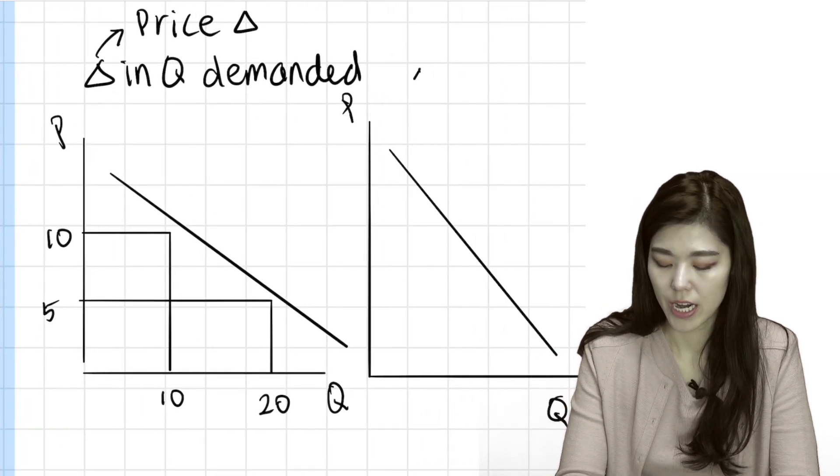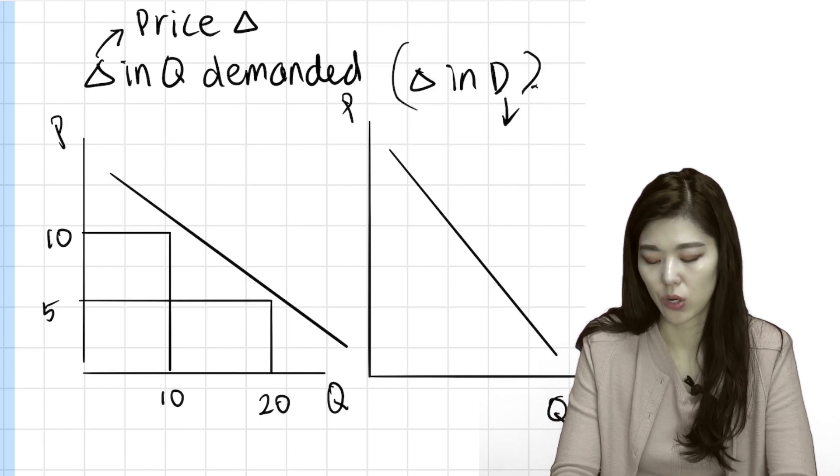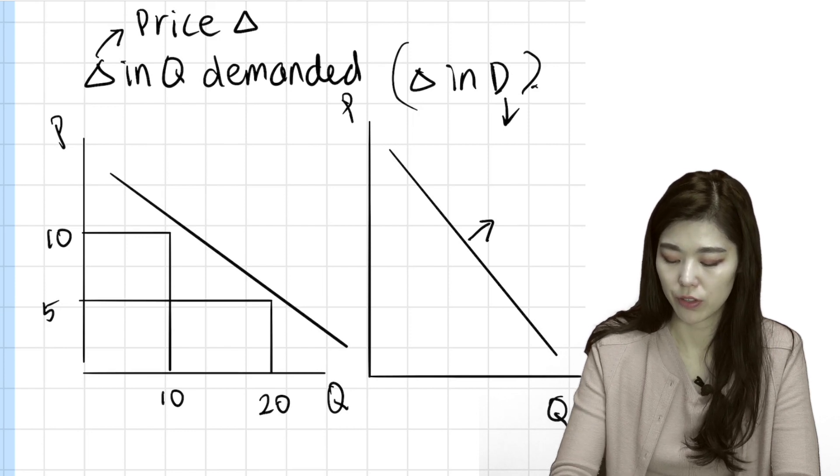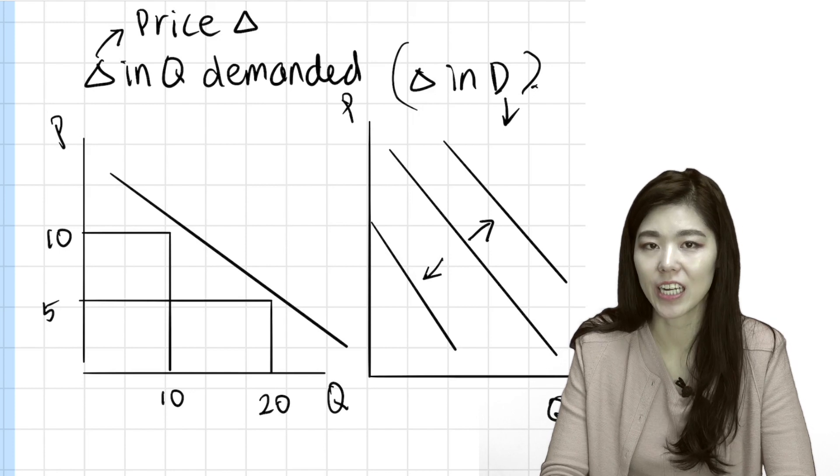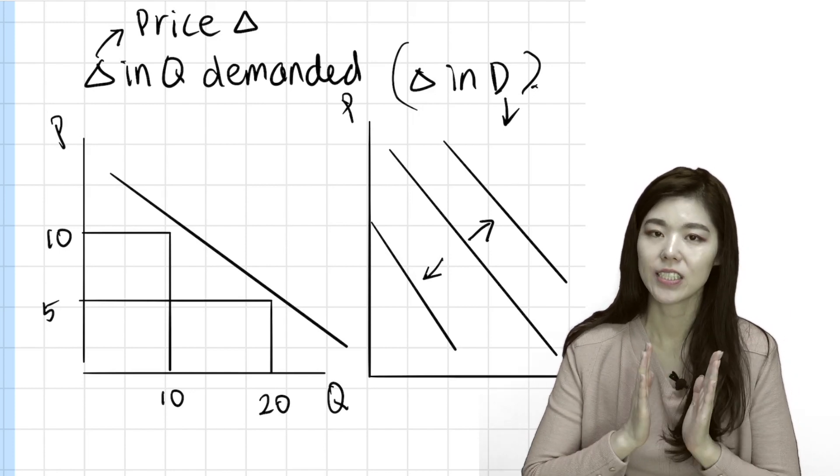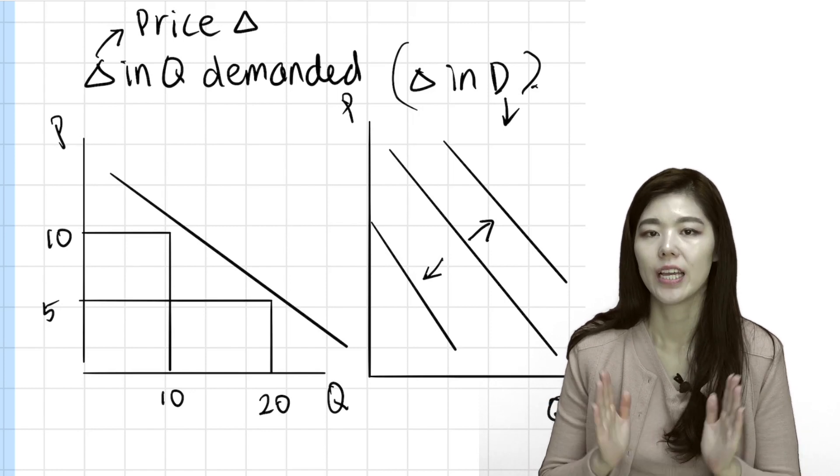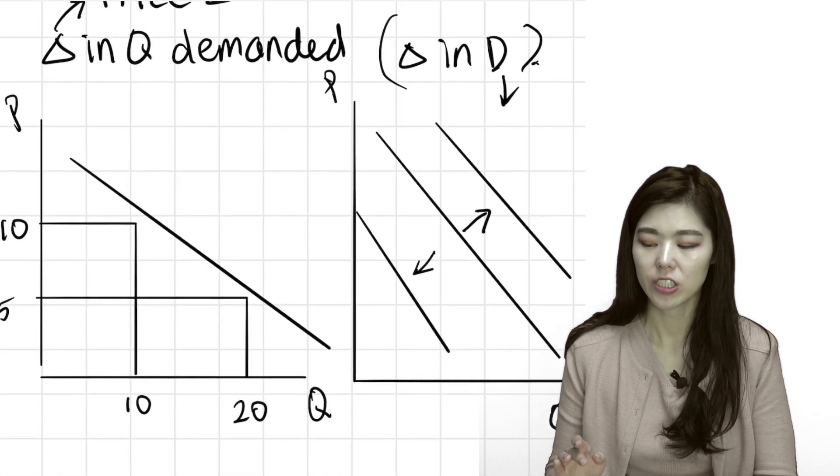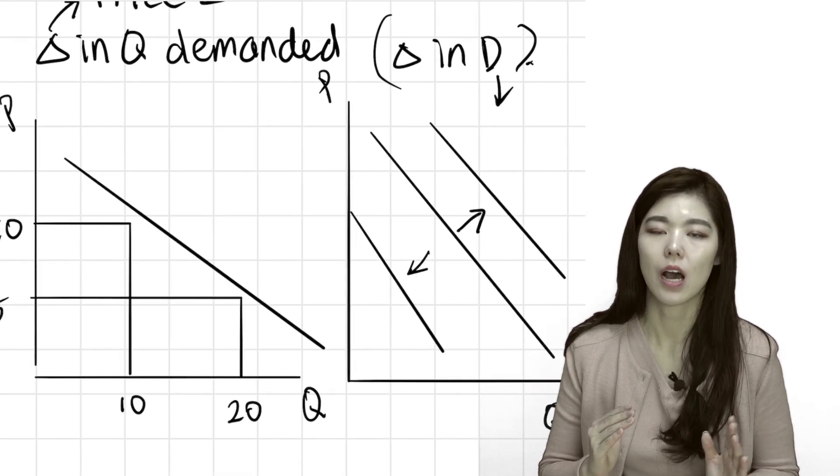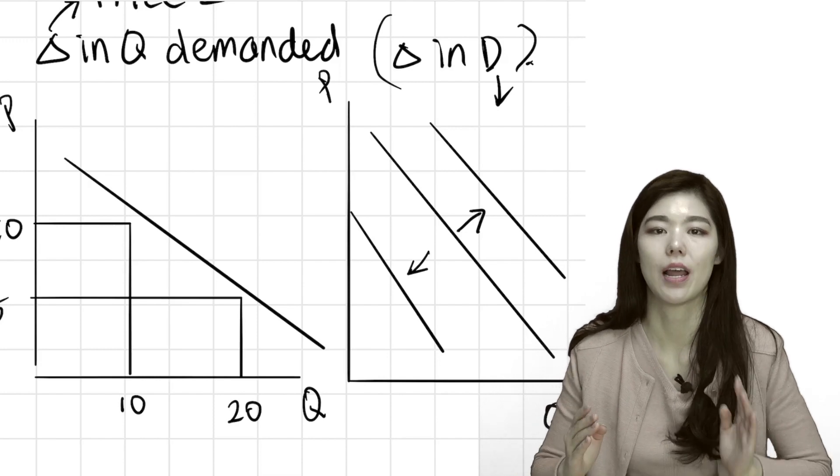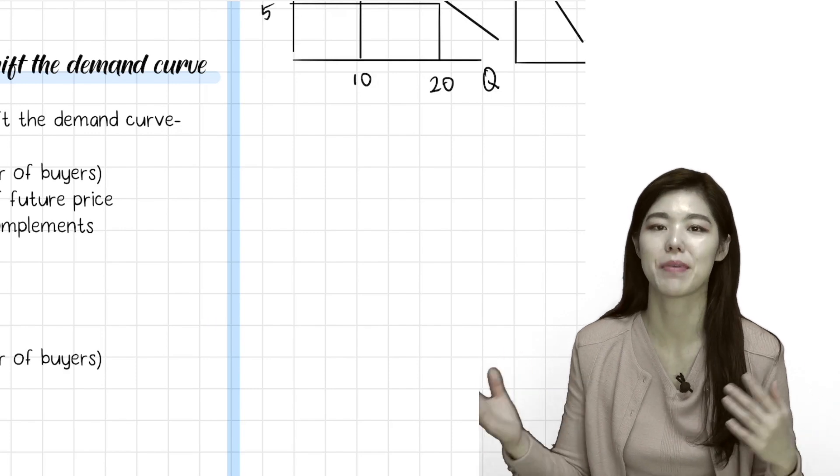Change in demand means a shift in demand. So either your demand will shift to the right or your demand will shift to the left. That's a change in demand. So to sum up, change in quantity demanded only occurs when there is a price change. It's a movement along the demand curve. And change in demand means it's a shift in demand curve. So the demand will shift either to the right or to the left. In regard to that, I will tell you what factors change the demand and shift the demand curve.